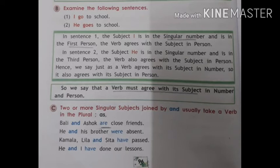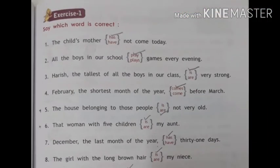Two or more singular subjects joined by 'and' usually take a verb in the plural — meaning when there are two or more subjects, we use a plural verb. For example: 'Bali and Ahsoka are close friends'; 'He and his brother were absent' — there are two subjects so we take a plural verb; 'Kamala, Leela and Sita have passed'; 'He and I have done our lessons.'